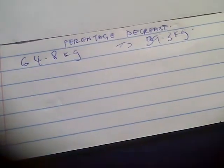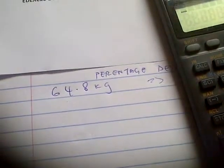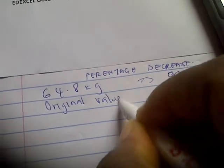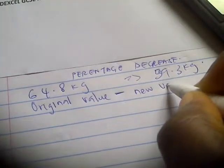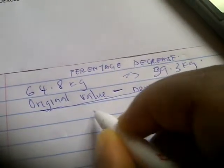Now, the percentage decrease you're going to calculate by subtracting what it was. This was what it was originally and then it became this. So, original value minus the new value, divided by original value.